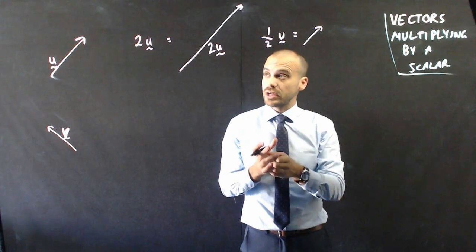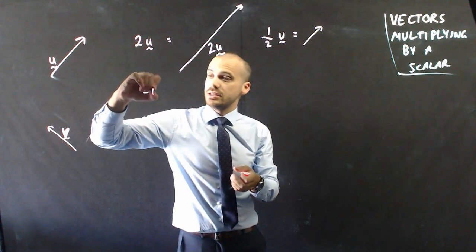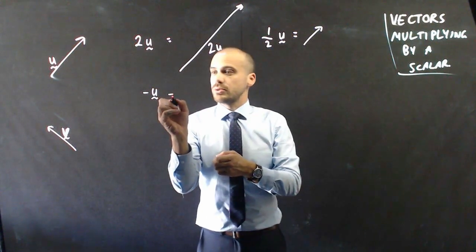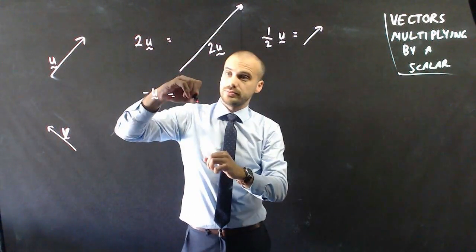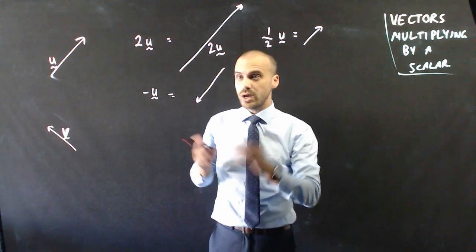If I wanted to do vector negative u, or negative 1u, that's going to be equal to the same vector, but in the other direction. Same direction, but going in the opposite way.